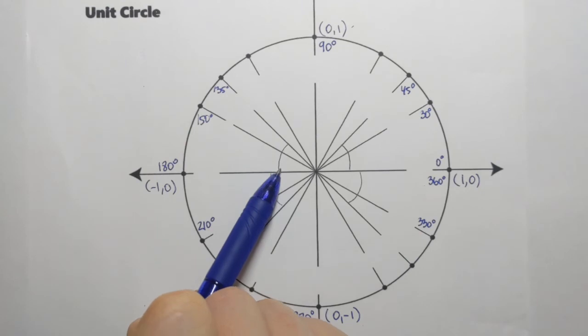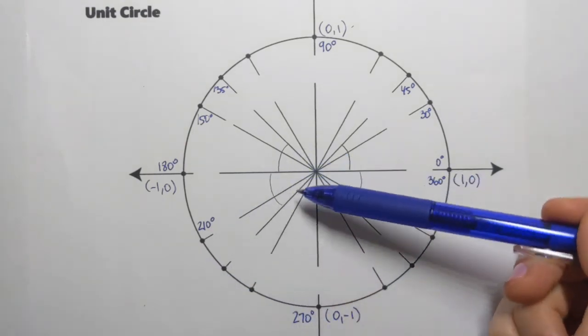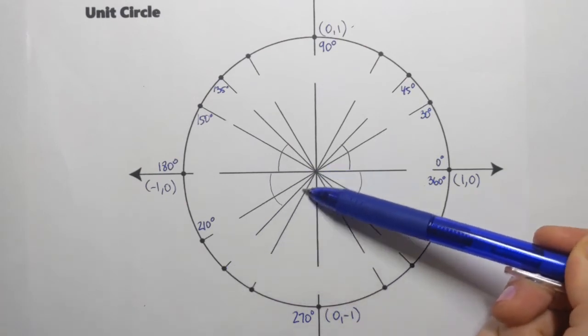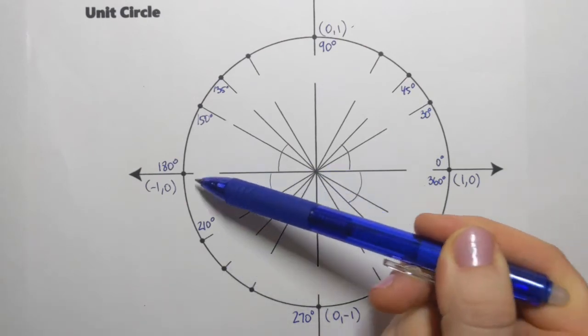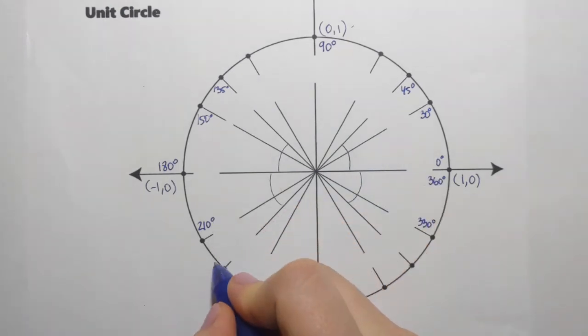The one that has reference angle 45 degrees. In quadrant three, so that's the angle that I need to find. It terminates here. So I'll take 180 and add 45. So that will give me 225 degrees.